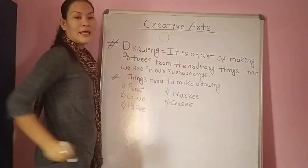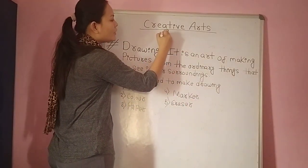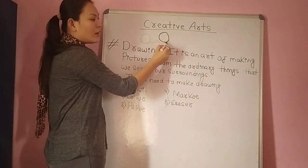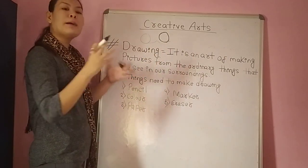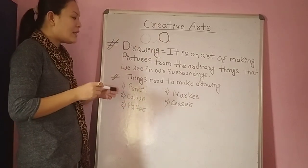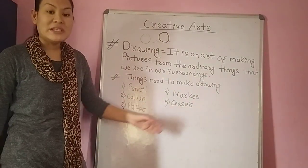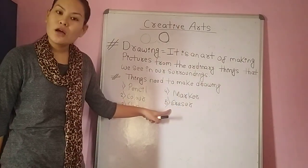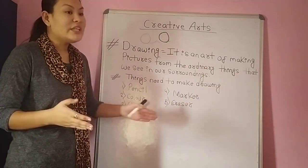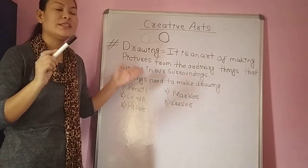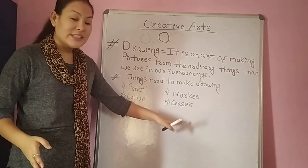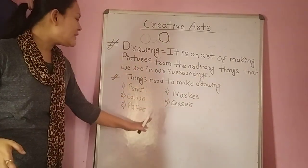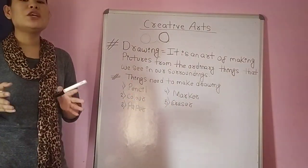The fifth material is eraser — we need it to erase our mistakes. These are the basic materials to make a drawing. We also need a sharpener to sharpen our pencil, which I am not mentioning in the list but you can write it down if you like. So the basic materials are: pencil, color pencil, paper, marker, and eraser.